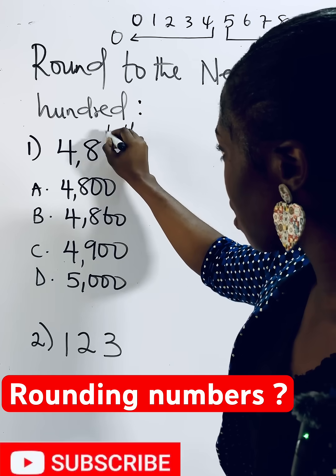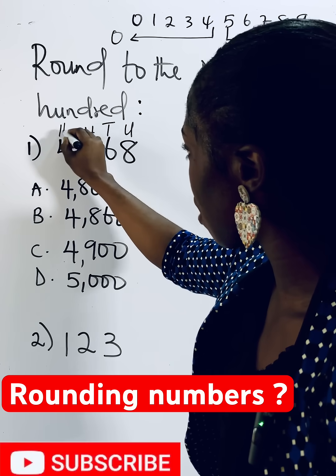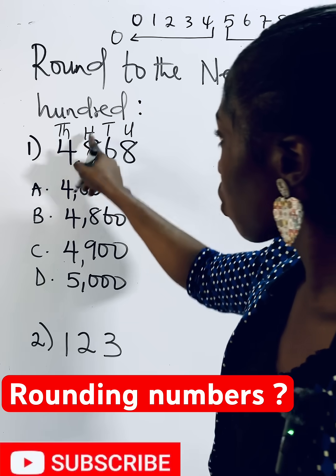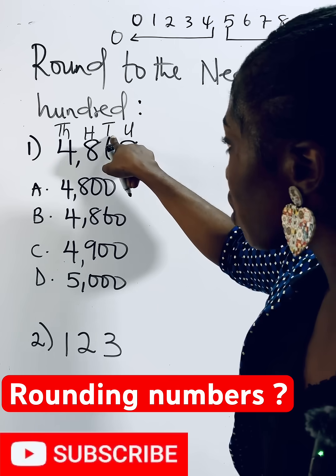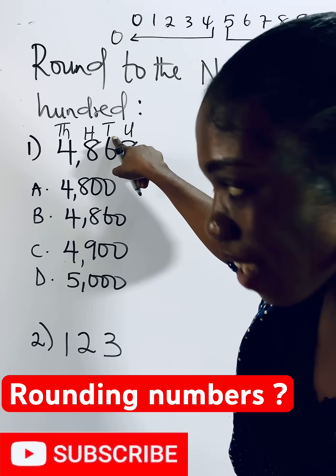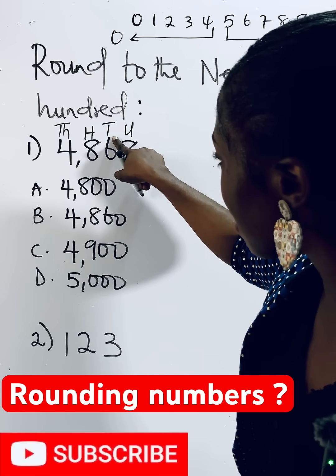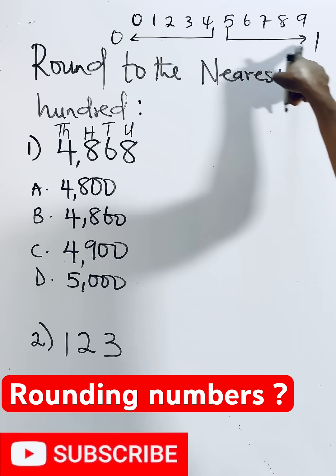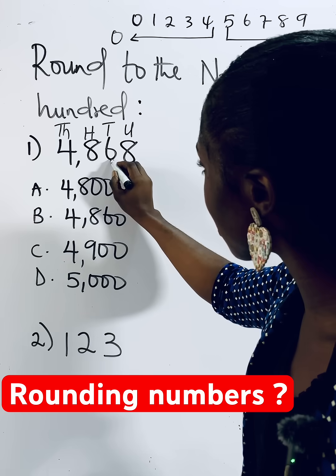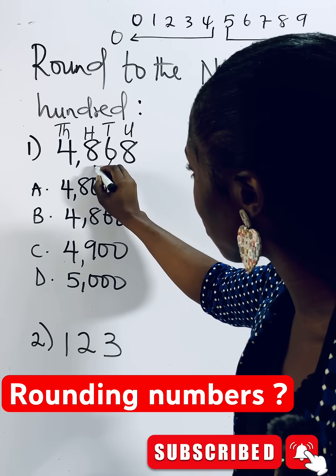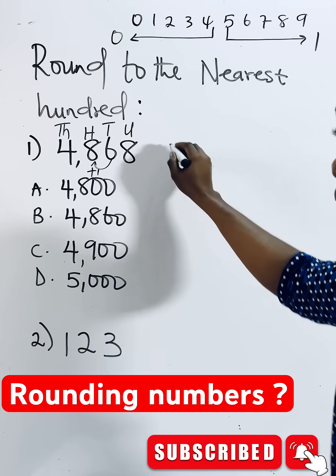...this is your units, this is tens, this is hundreds, this is thousands. So if you are rounding to the nearest hundred, you start from the tens. The tens digit is in the family of one, so you are going to count this six as one, and add that one to this eight.